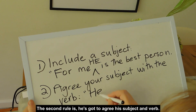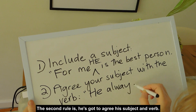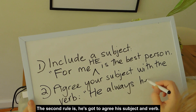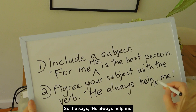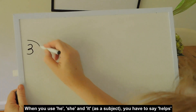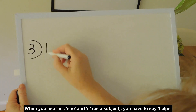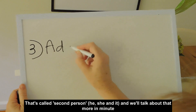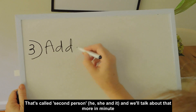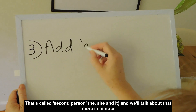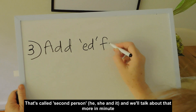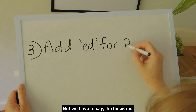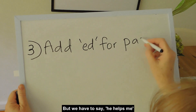The second rule is he's got to agree his subject and verb. So he says, 'He always helped me.' When you use he, she, and it, you have to say 'helps.' That's called second person. We'll talk about that a bit more in a minute, but we have to say 'he helps me.'